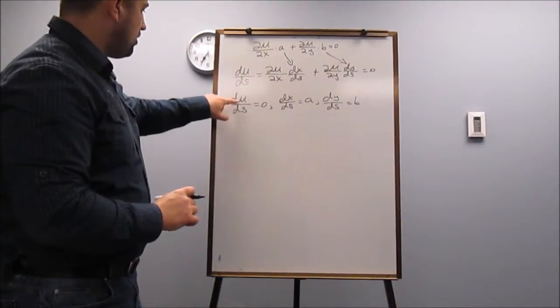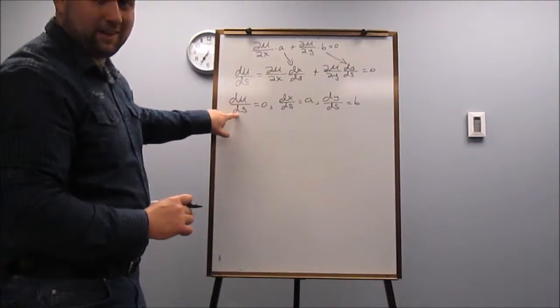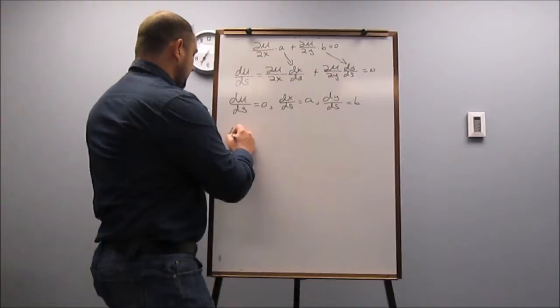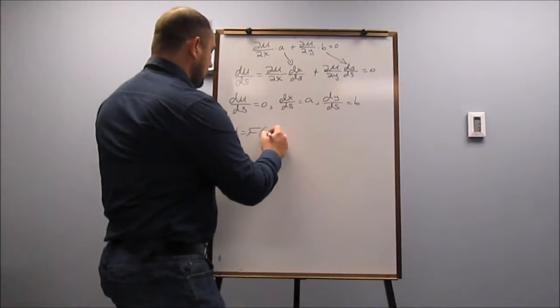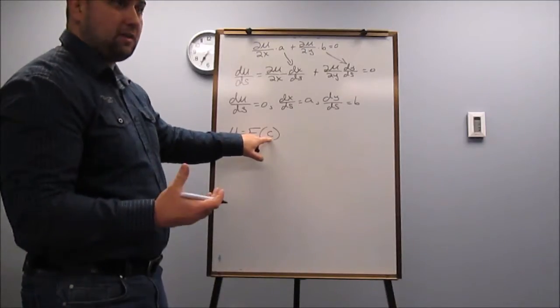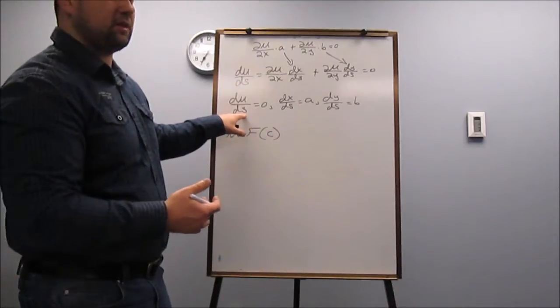Okay, so let's take a look at this guy here. So the derivative of U with respect to S tells us that U has to be a function that is constant with respect to S.